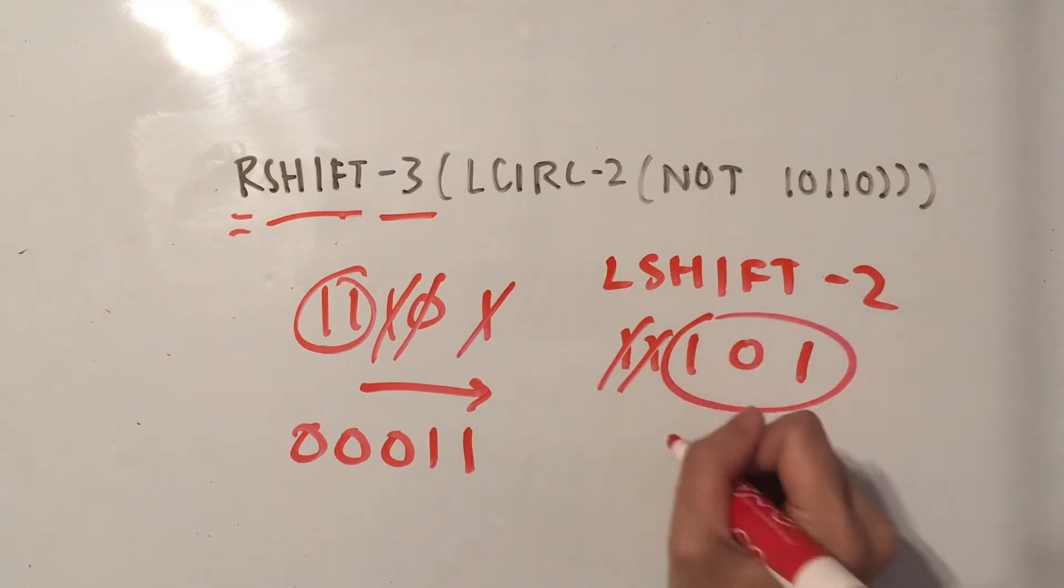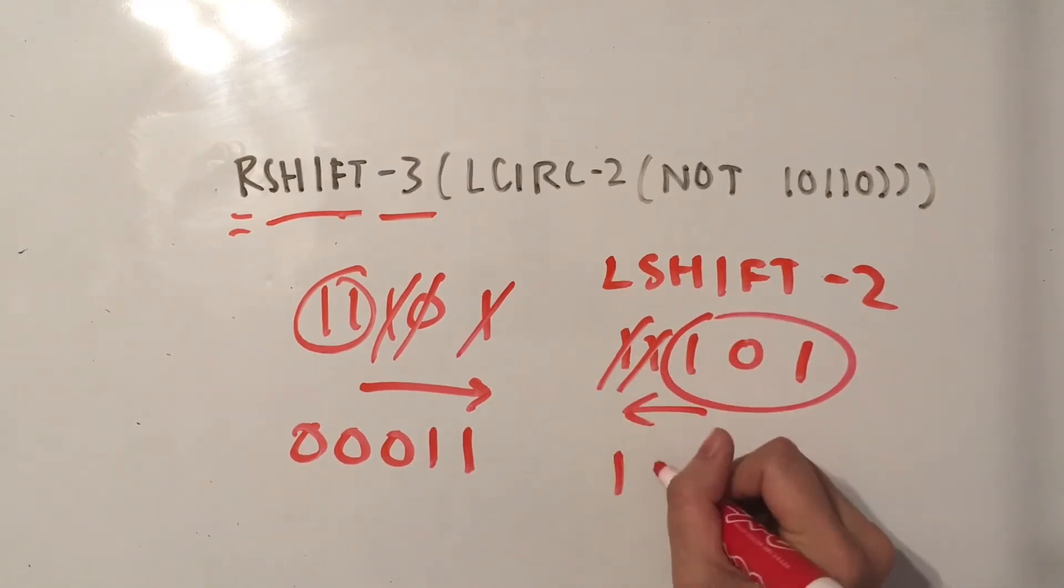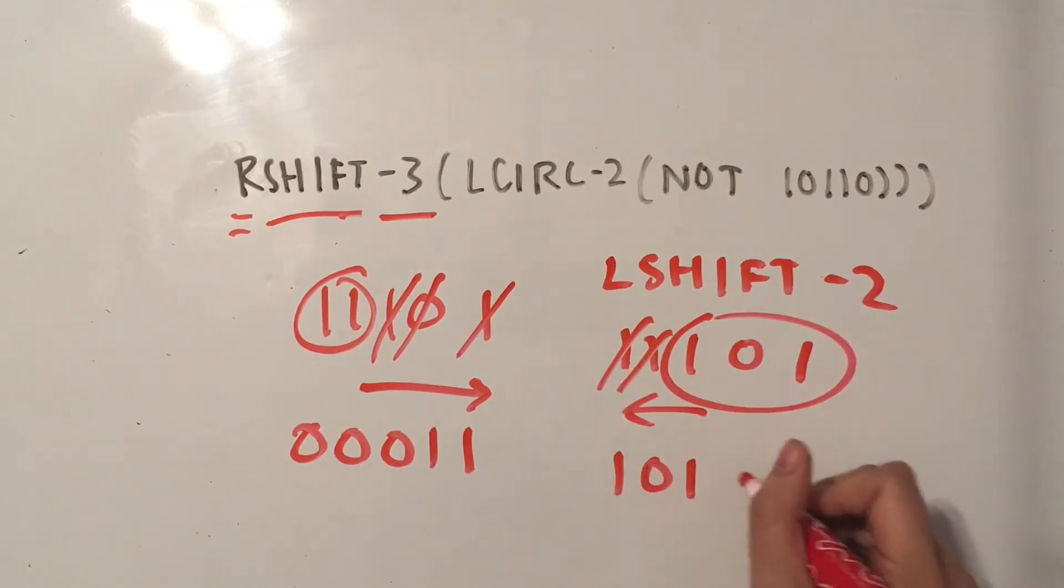Take out 2, shift these remaining over to the left, so we have 101, and then fill up the 2 remaining spots with just 0's.